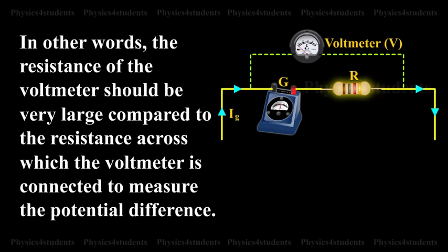In other words, the resistance of the voltmeter should be very large compared to the resistance across which the voltmeter is connected to measure the potential difference.